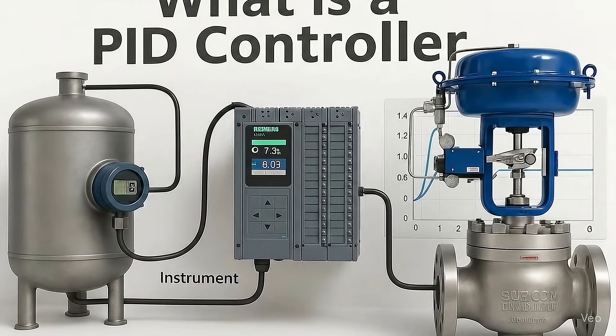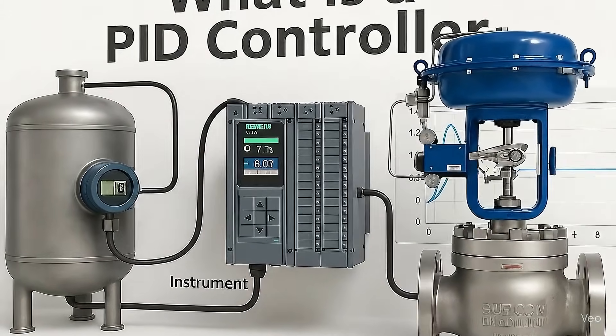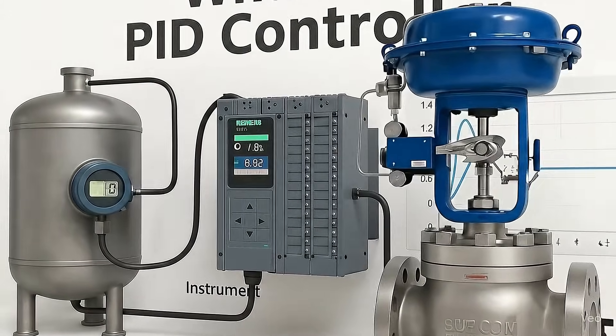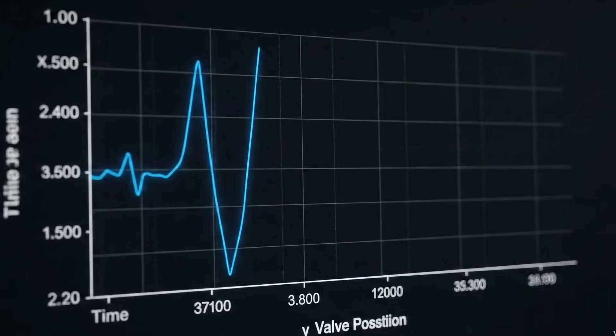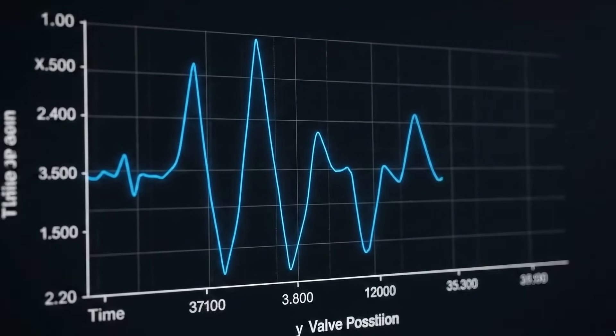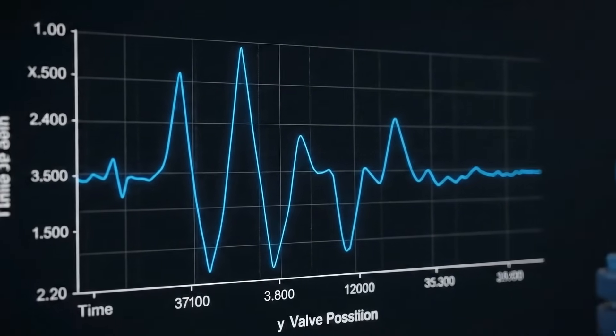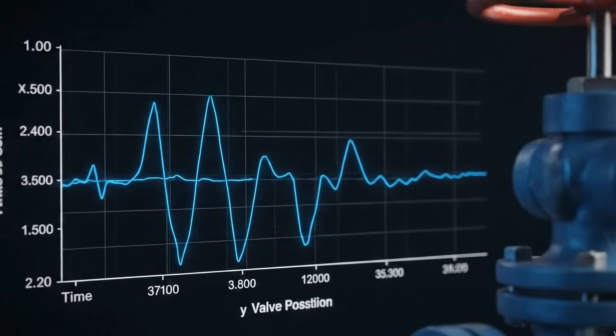What keeps temperature, pressure, and flow steady in your plant? It's a PID controller — the brain of automation.